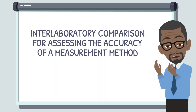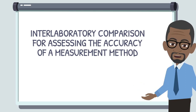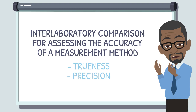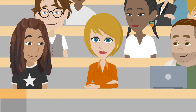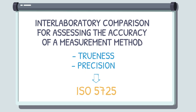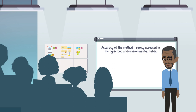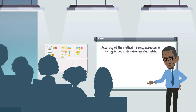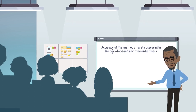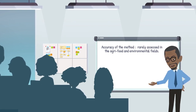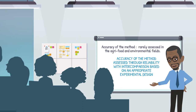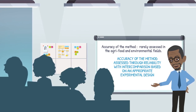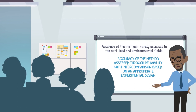If we wish to estimate the accuracy of a measurement method, we must focus on the method's performance by quantifying its trueness and precision. This purpose is achieved by the ISO 5725 series of standards, which can be divided into six complementary parts. It should be noted that metrological traceability of a value is not easily obtained in the agri-food and environmental fields, which is why the trueness of the method is rarely estimated in these fields.